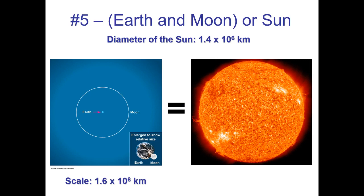It turns out the picture showing the Earth-Moon system is very similar in scale to the size of the sun. The diameter of the sun is 1.4 million kilometers, and our scale factor is 1.6 million — so you can interchange these pictures. This also shows how big the sun is: if you were to put the Earth at the center of the sun, the moon only goes out maybe two-thirds of the solar radius. The sun is absurdly large compared to human standards. As we zoom out further, we're going to start focusing on the sun rather than the Earth.